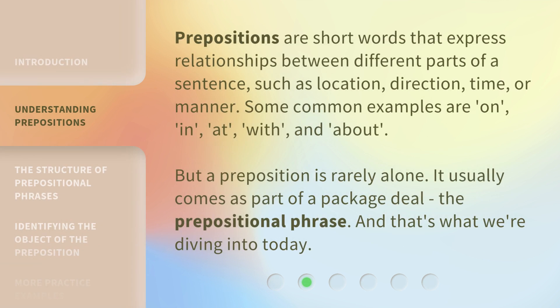Prepositions are short words that express relationships between different parts of a sentence, such as location, direction, time, or manner. Some common examples are on, in, at, with, and about.